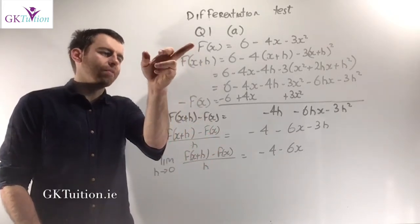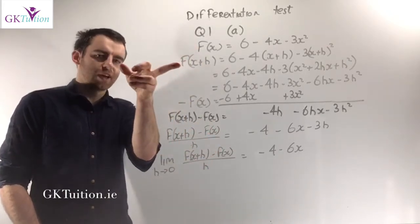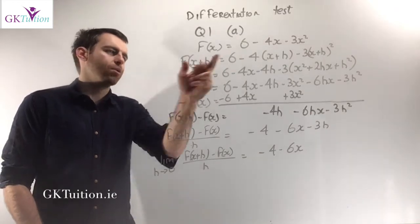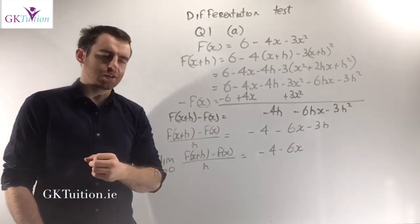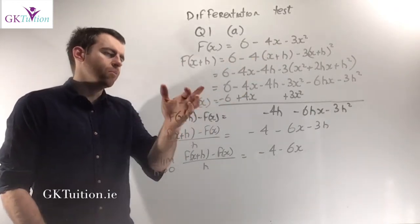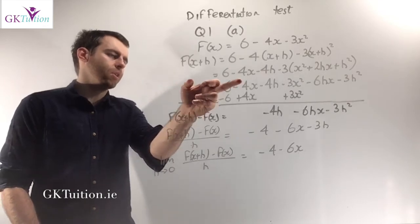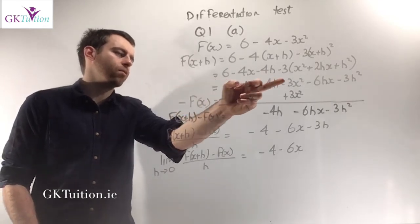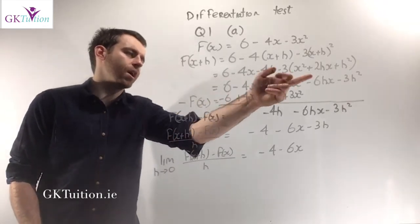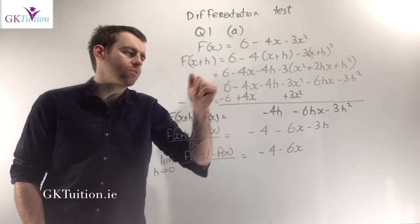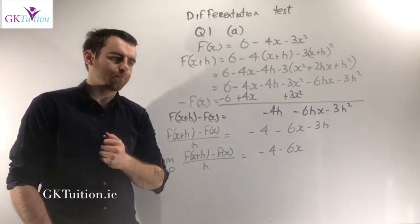Once you have f of x, you have to get f of x plus h. Everywhere there's an x, you sub in an x plus h. When you multiply it out, you should end up with 6 minus 4x minus 4h minus 3x squared minus 6hx minus 3h squared.